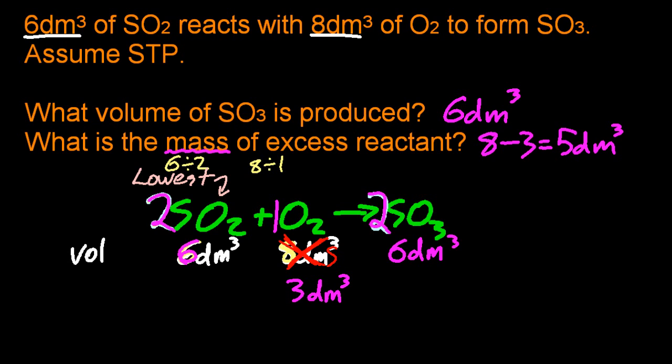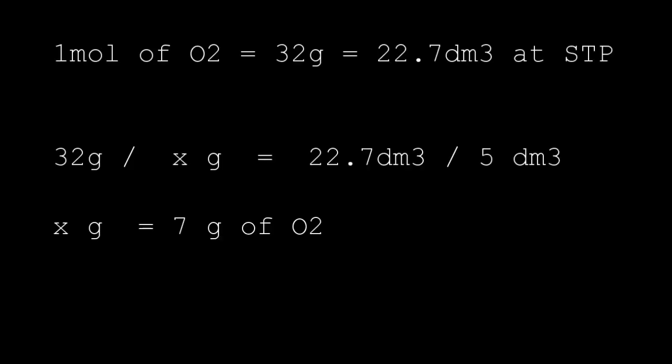Now the question asks for the mass. What's the mass of five decimeters cubed of oxygen? A mole of oxygen is 32 grams and 22.7 decimeters cubed at STP. Using some cross multiplication, I can work out the mass of oxygen.